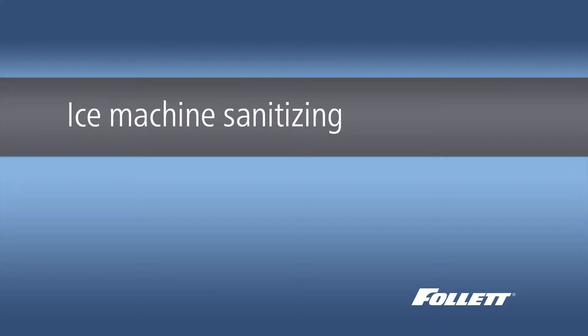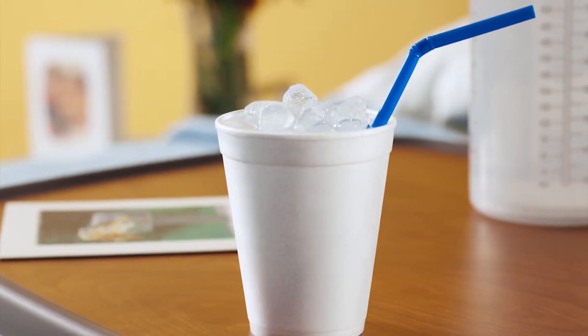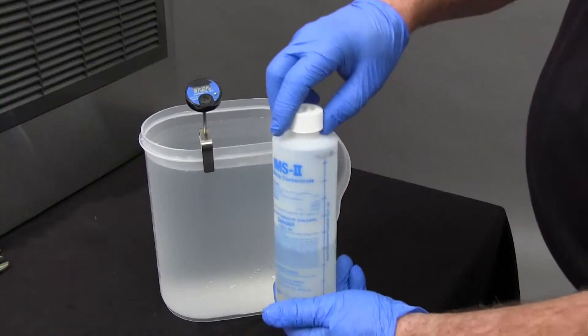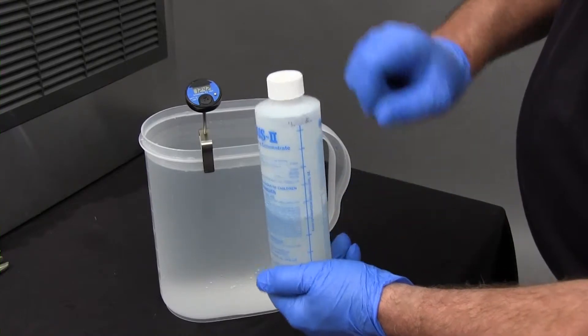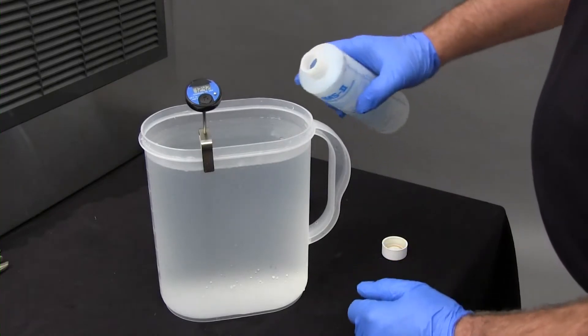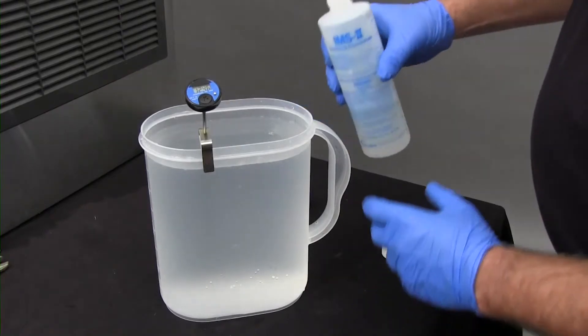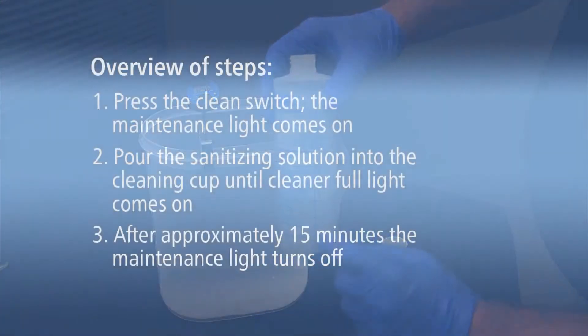Sanitizing is necessary to provide high-quality, sanitary ice. Sanitizing removes undesirable and potentially harmful microbial growth from the ice machine. Mix the sanitizing solutions per the manufacturer's instructions. Use 1.6 ounces of Nucalgon IMS-2 sanitizer with 1 gallon of water that is at least 100 degrees Fahrenheit. The remaining steps to sanitize the ice machine are the same as the steps used to clean the ice machine. Simply repeat the process using the sanitizing solution in place of the cleaning solution.